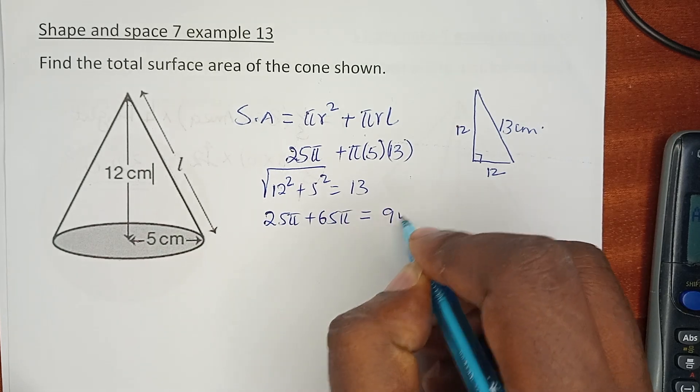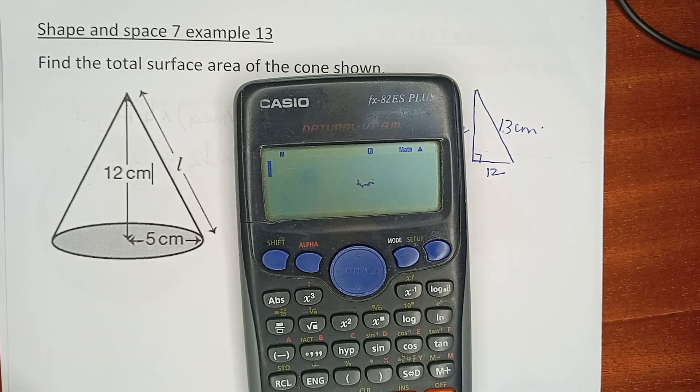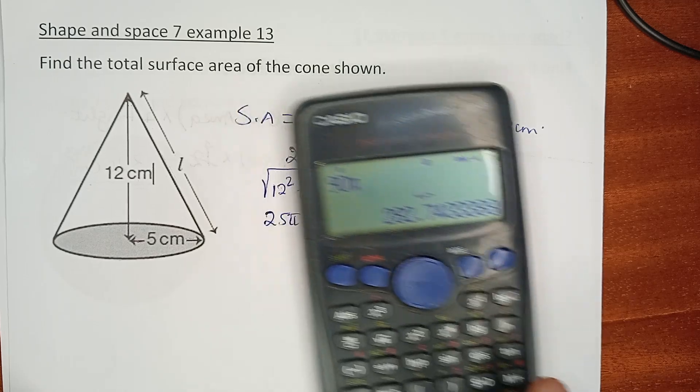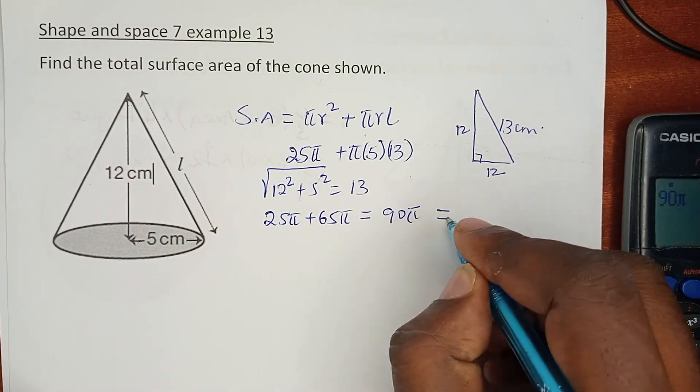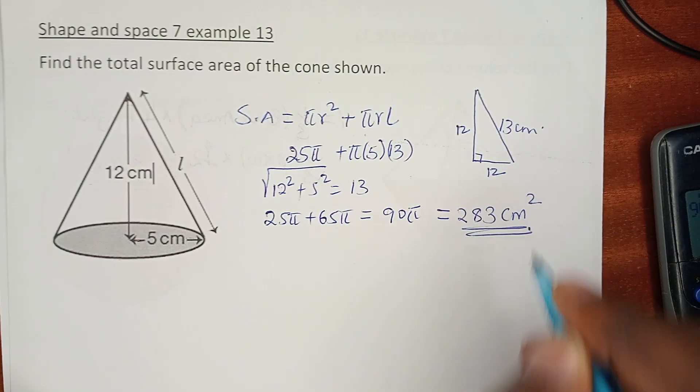90π is equal to 283 cm². That is the total surface area of that particular cone.